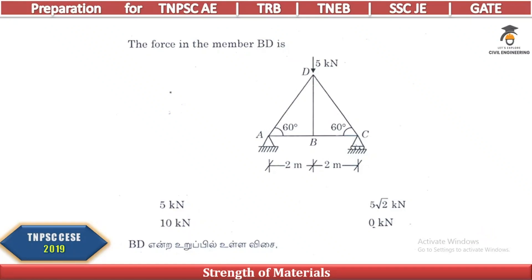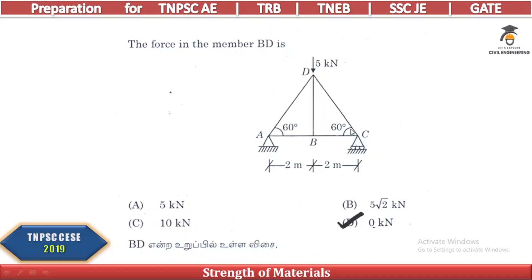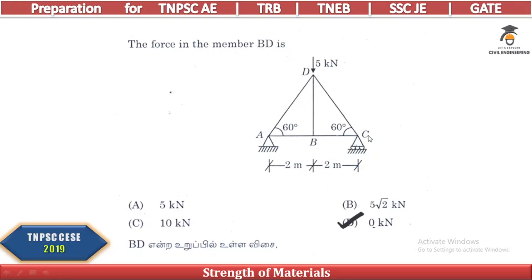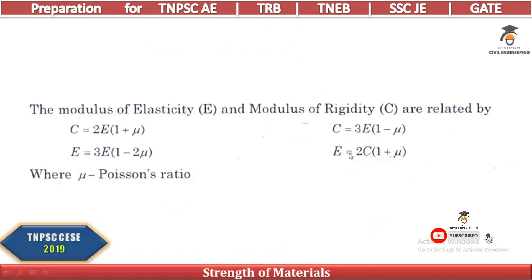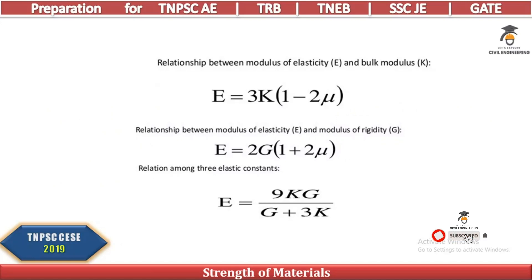To find the force in member BD, we solve the truss by method of joints or sections and force resolution. The triangle geometry gives 5 kN equals 2.5 kN components, and the answer for member BD is 0 kN. The modulus of elasticity and modulus of rigidity are related by E = 2G(1 + 2μ).